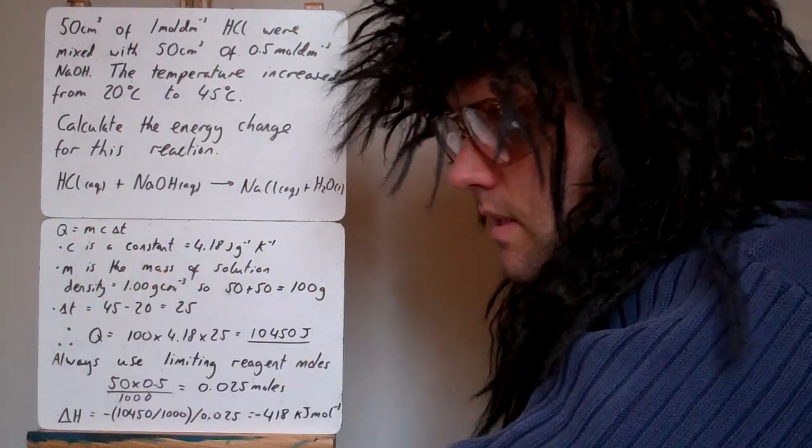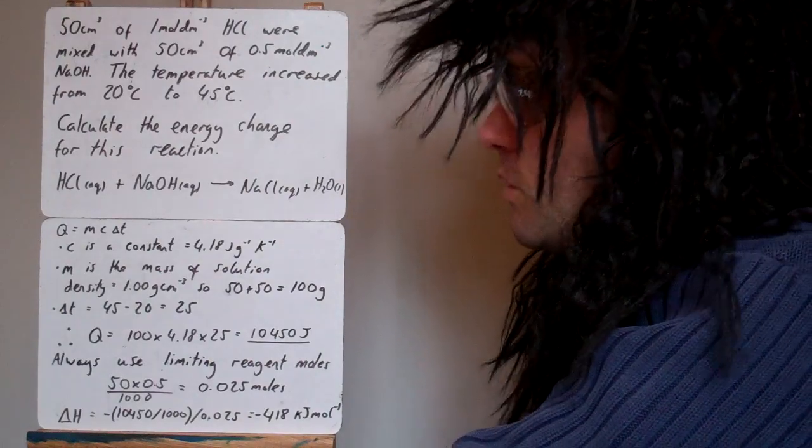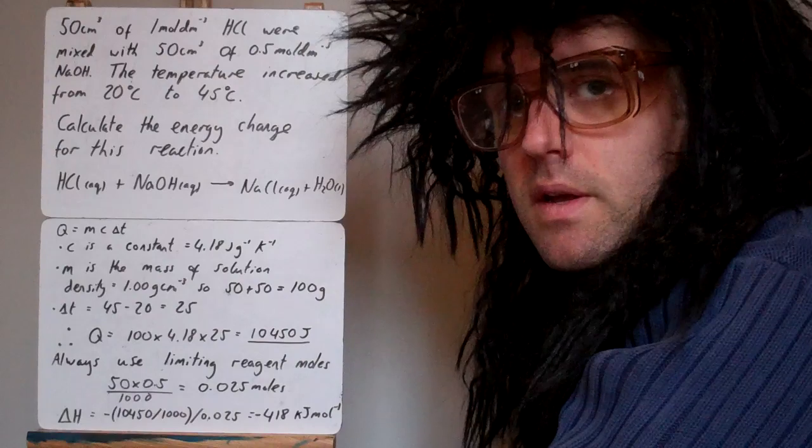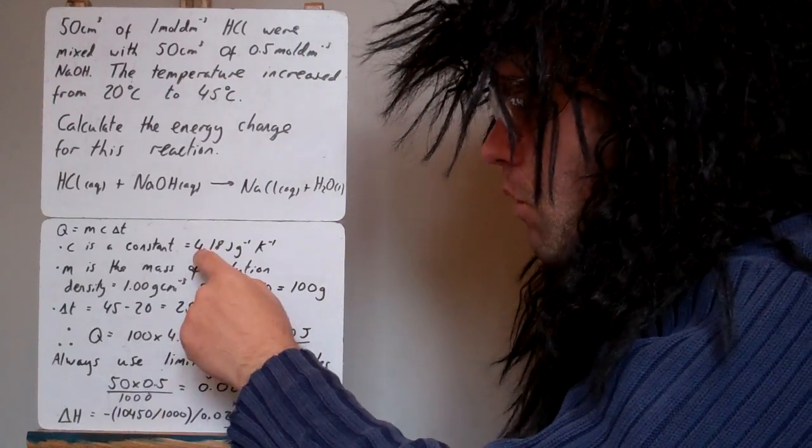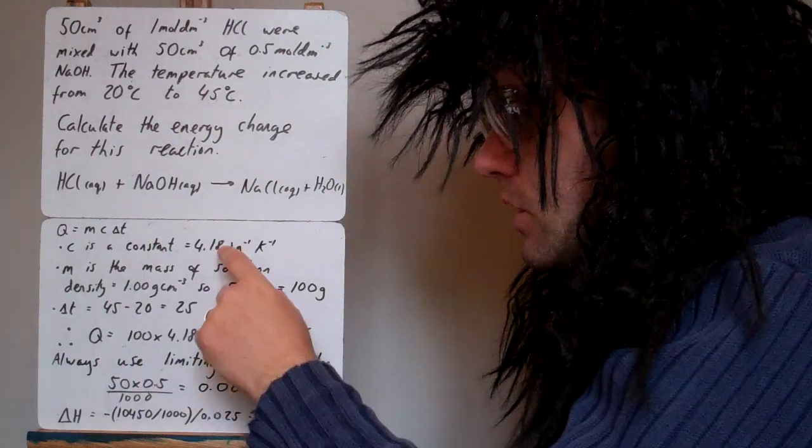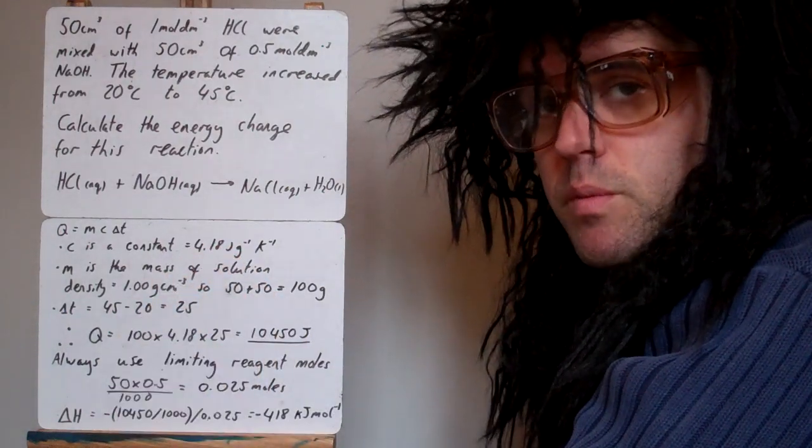So C is the specific heat capacity. So for this one we're using two solutions. Both the solutions are predominantly water, and the heat capacity of water is 4.18 joules per gram per Kelvin. So that's a constant, and that's the one that you pretty much always use.